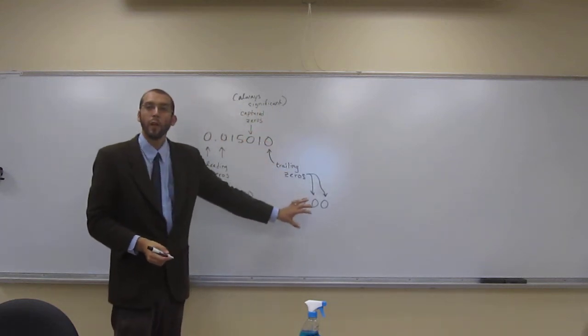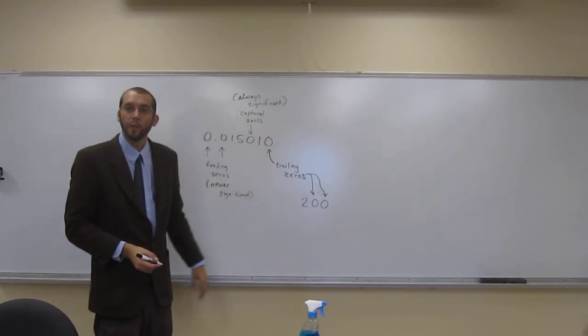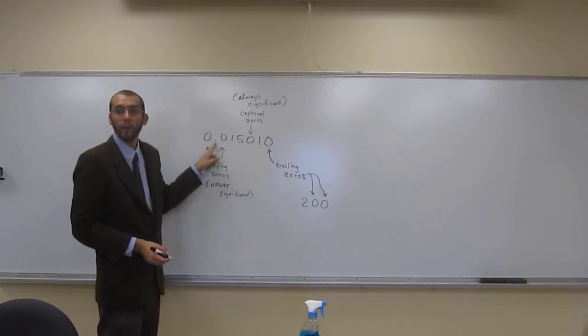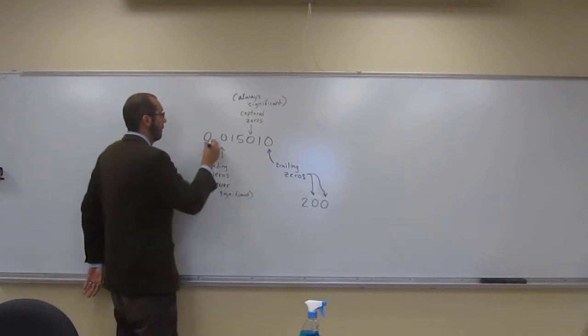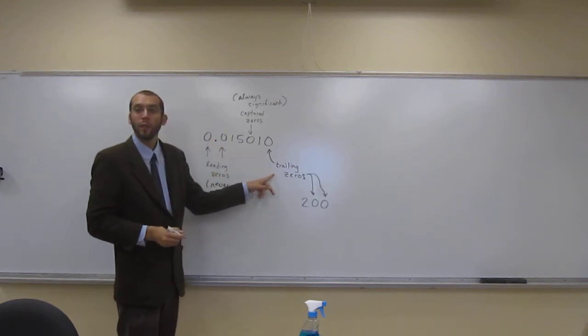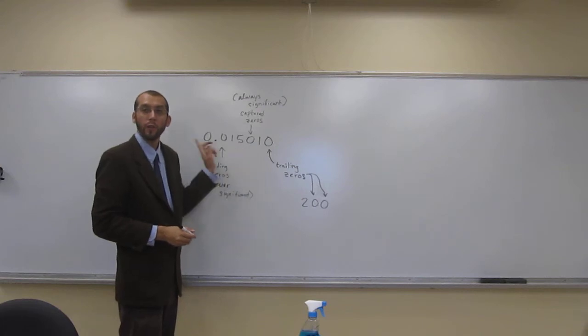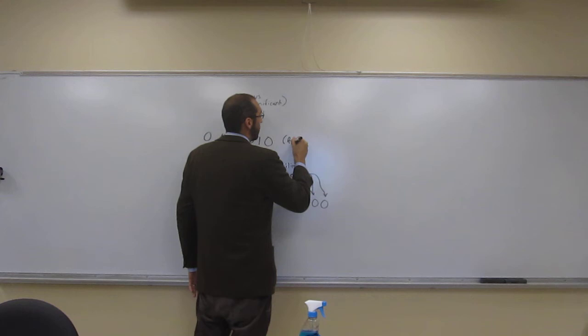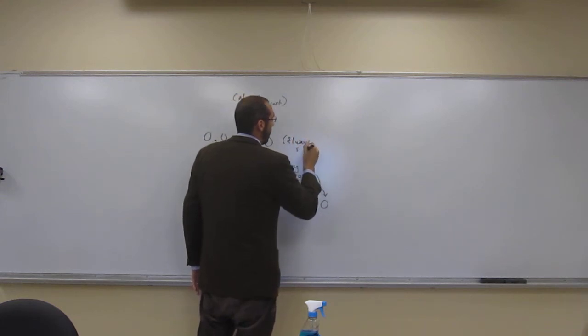So is everybody okay with all of those being trailing zeros? Notice this number has a decimal point in it. Decimal point there. Whenever the trailing zeros are in numbers with decimal points, they're always significant.